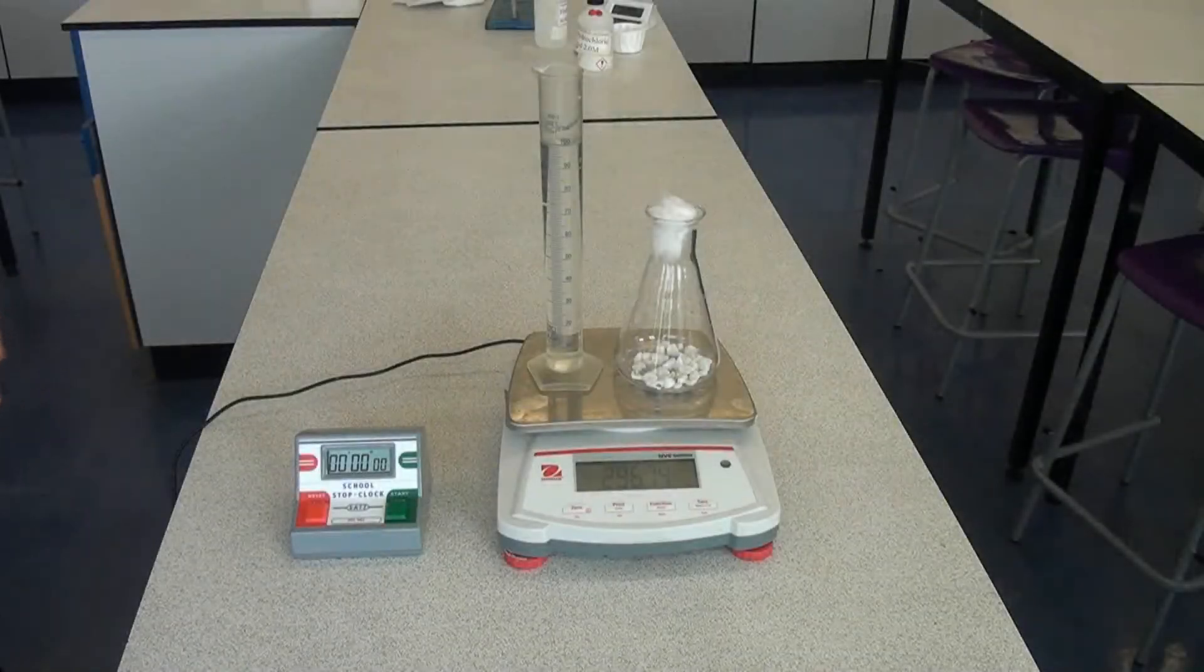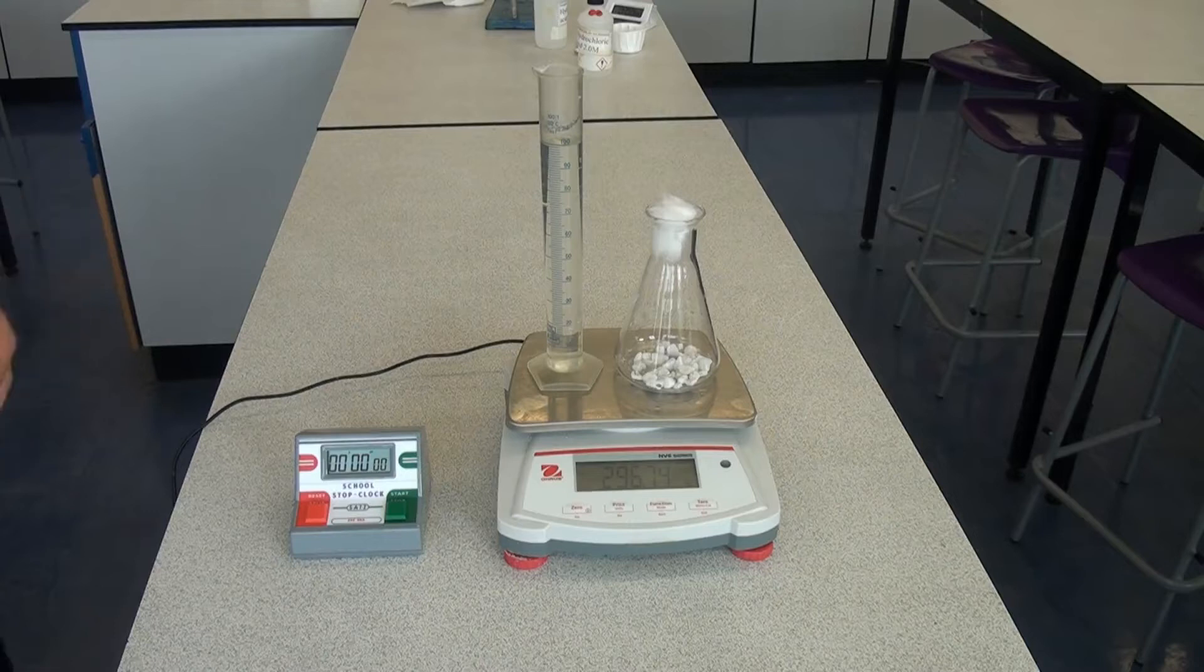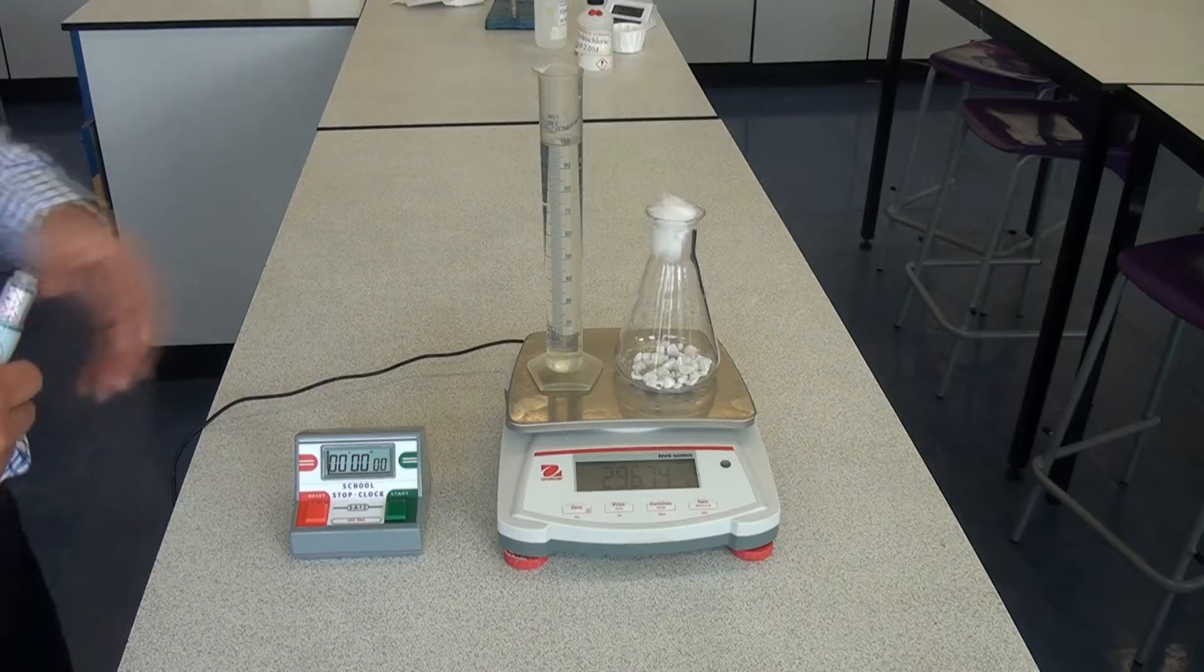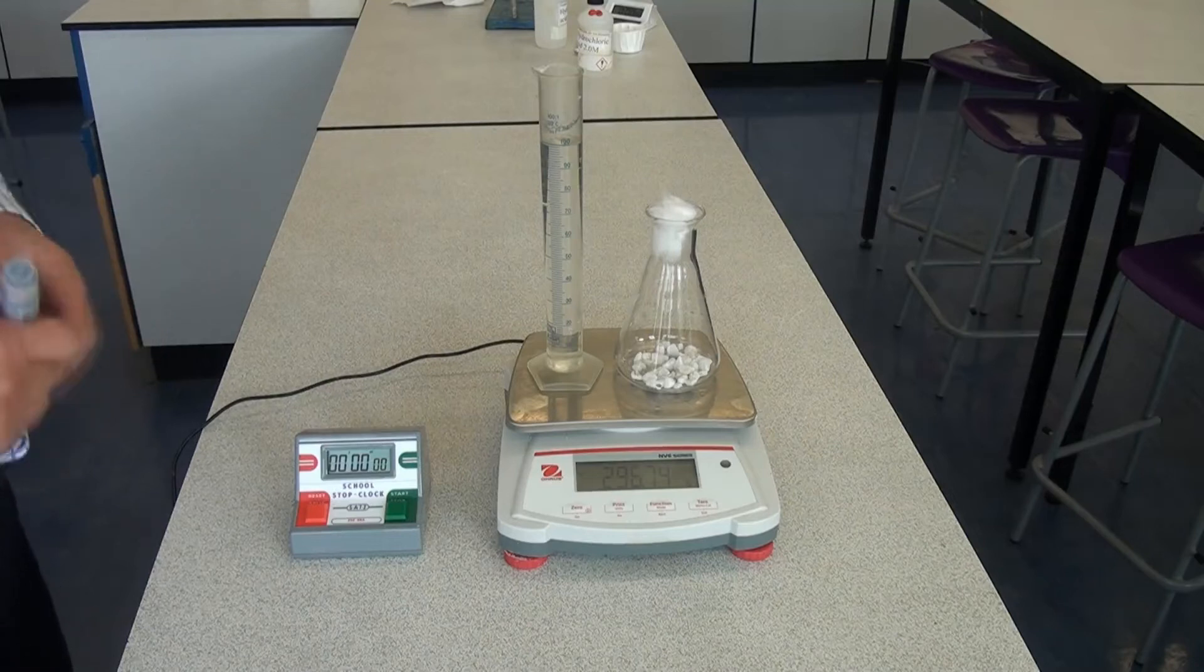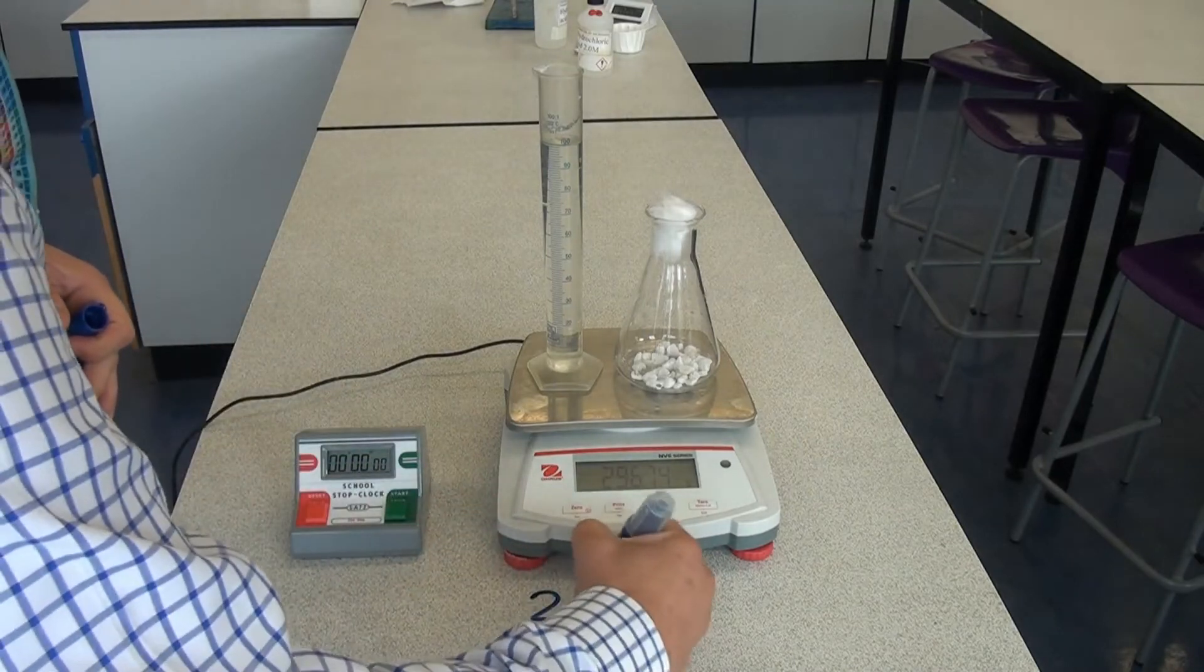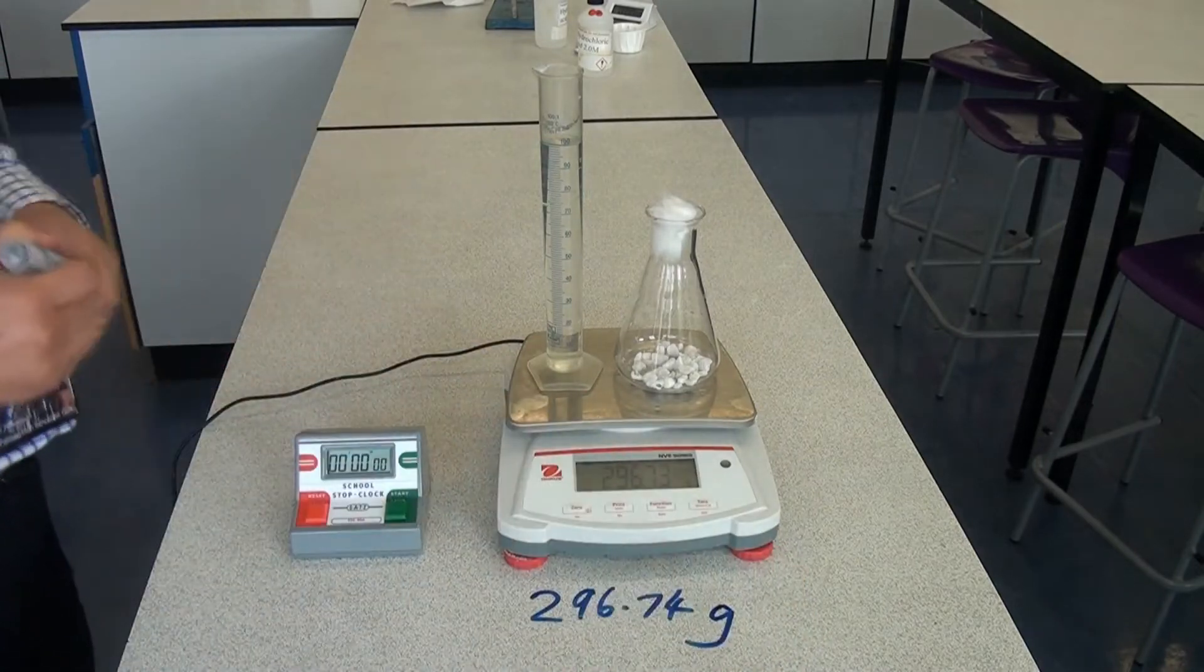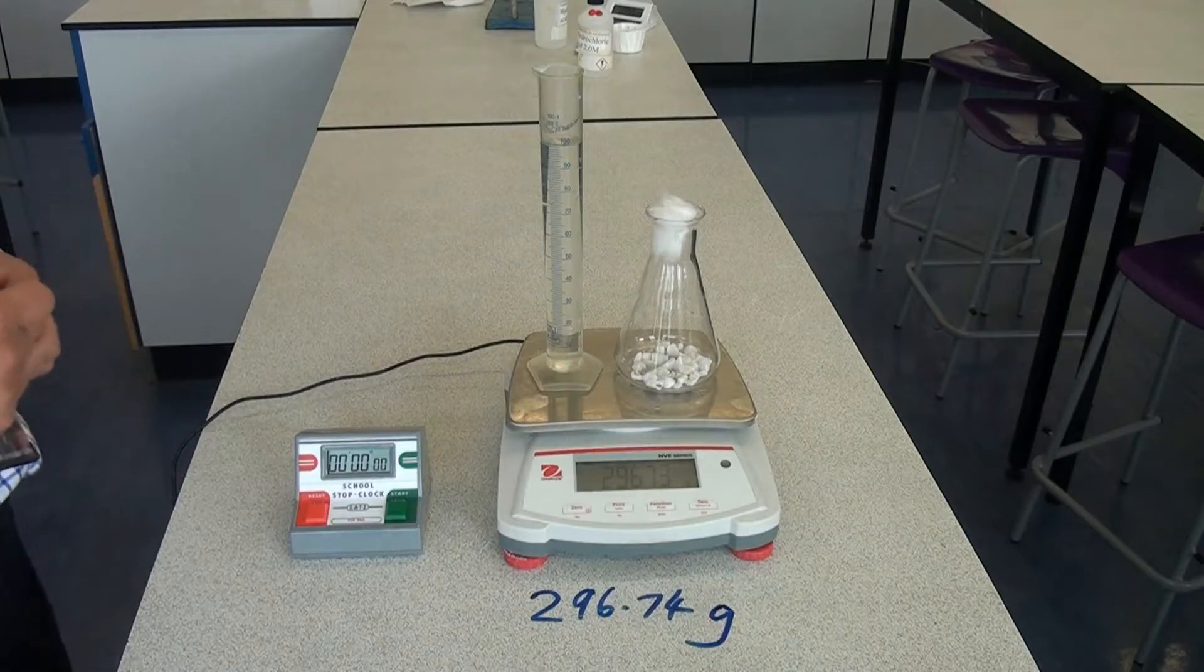So if the reaction does produce a gas, there is one other way that you can use to measure the rate of reaction. This time, we're not measuring the volume of gas given off. We're measuring the mass of the contents of the flask. So if I write down the mass to start with, it's 296.74 grams. And that's all of the equipment and all of the reactants inside.